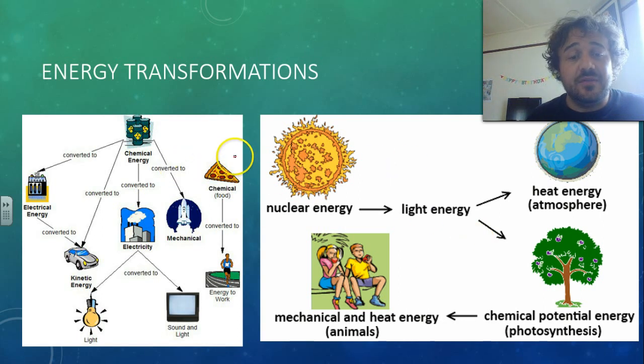Here are another couple quick examples. So we start off with chemical, so food, and that's converted to energy to work, it's mechanical energy. Here we can have chemical energy, it looks like something radioactive there, but it's probably just coal, and then it's burnt to make electricity, and then that's converted to light, and sound and light, and however we want to use it.